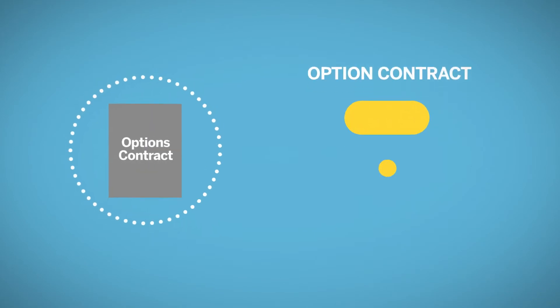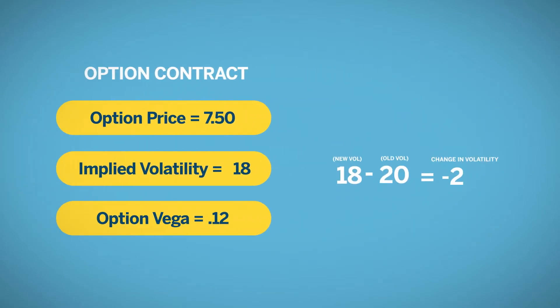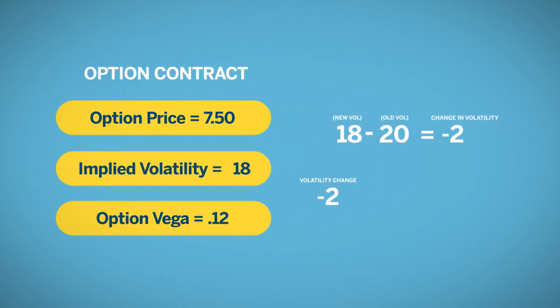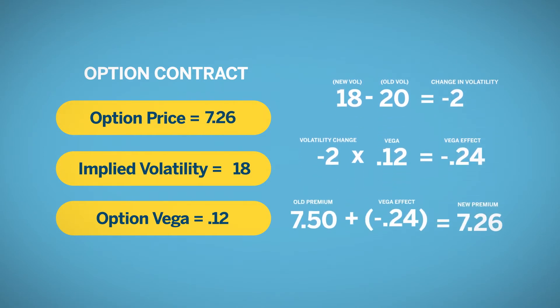Conversely, if volatility dropped from 20 to 18, this two-point decrease times 0.12 equals 0.24, making the option premium 7.26.